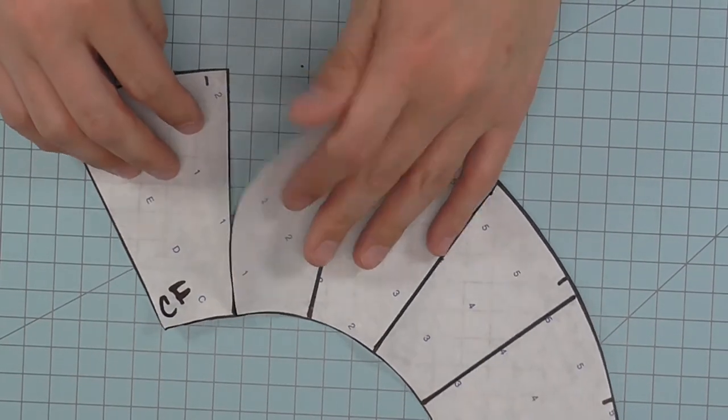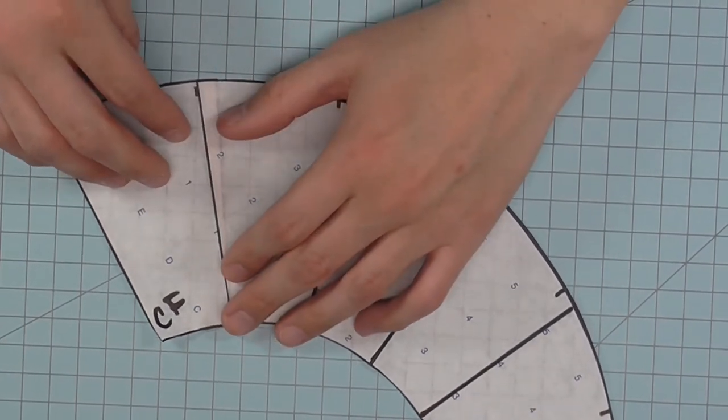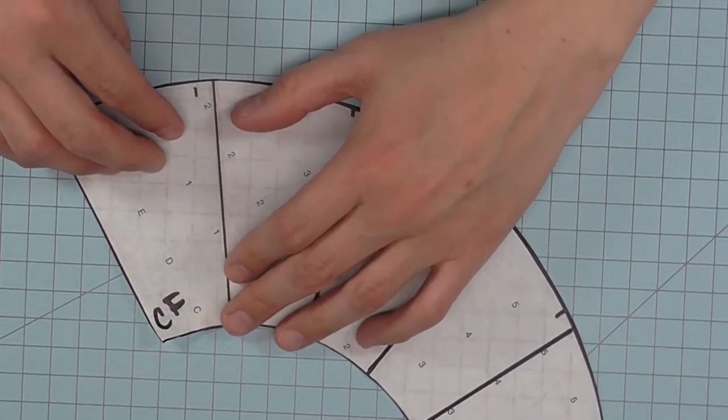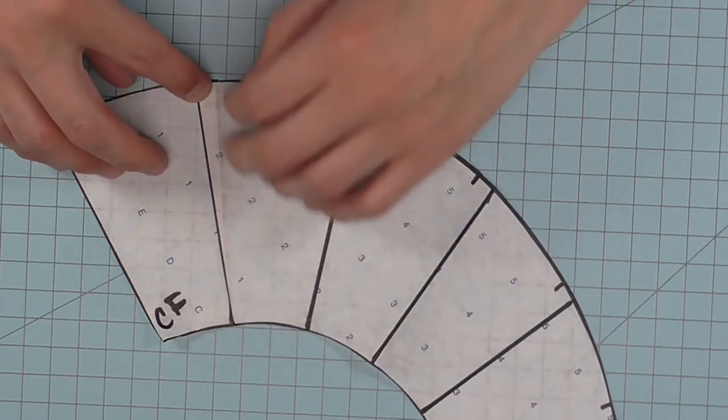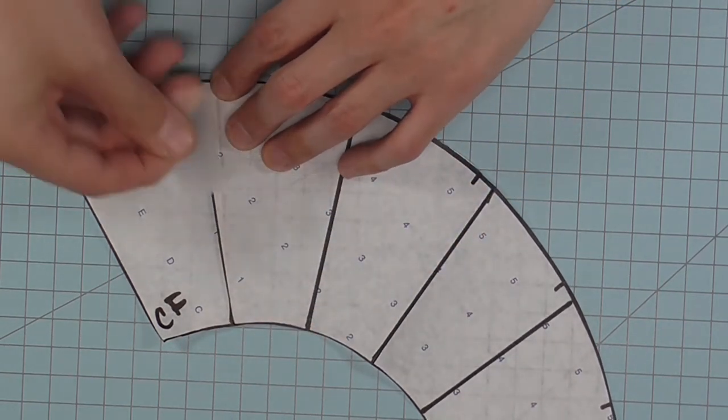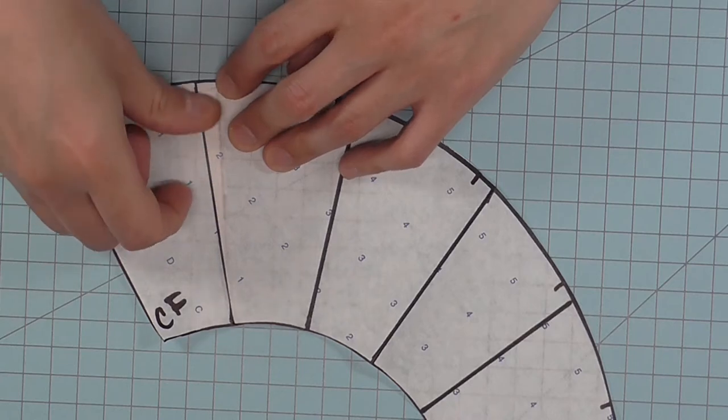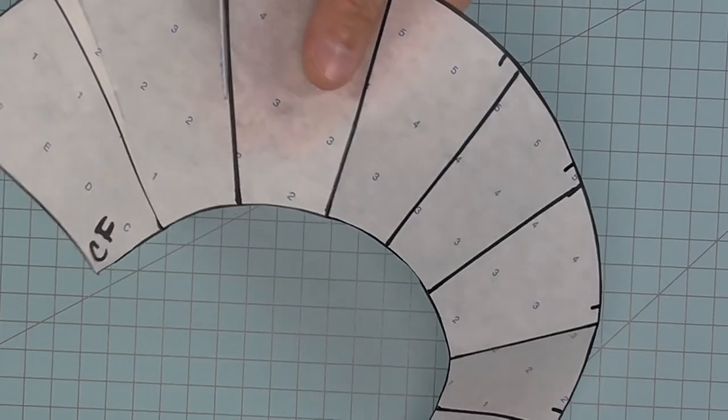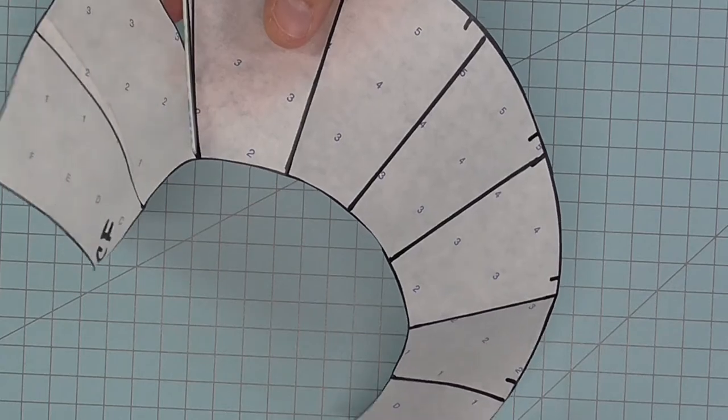You are then going to swing one side over to match the mark that you made. You might have a little jog at the bottom. That's okay. We're going to smooth that out in a little bit. Once you have it moved over, tape it down. You're going to repeat for every line that you have.